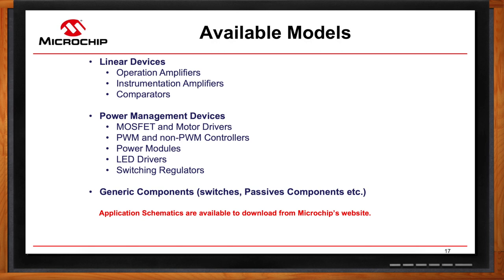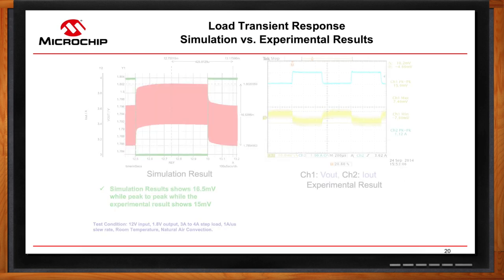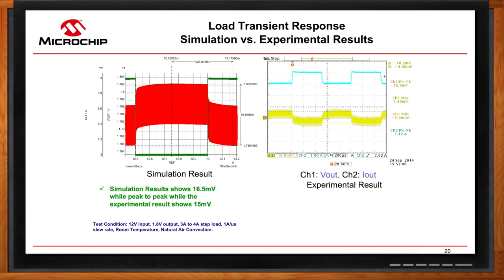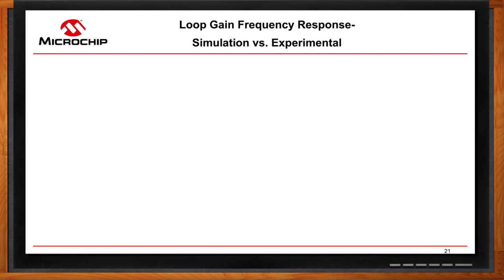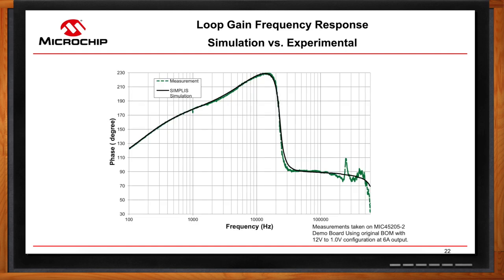How about some real numbers — what does simulation look like compared to actual results? Here's an example of output voltage ripple: our simulation result was 10.2 millivolts peak-to-peak, while the experimental lab measurement was 9.4 millivolts peak-to-peak — very little deviation. For load transient response, simulation showed 6.5 millivolts and experimental showed 15 millivolts. For loop gain frequency response, simulation and experimental results are almost on top of each other across the entire frequency range. To improve results, include proper component derating and parasitic values.